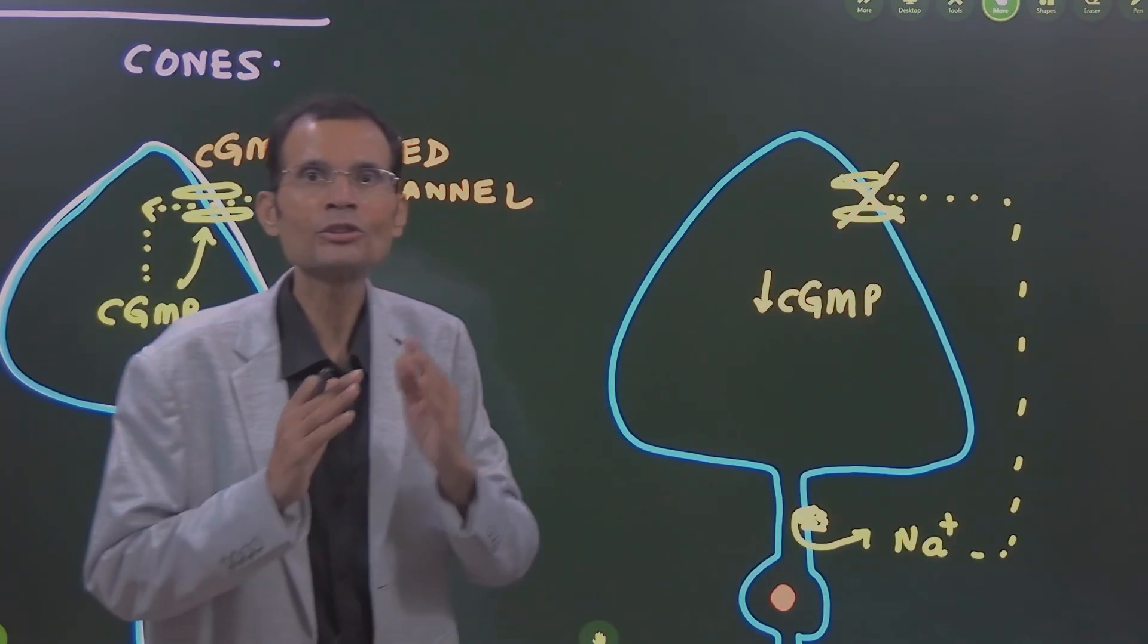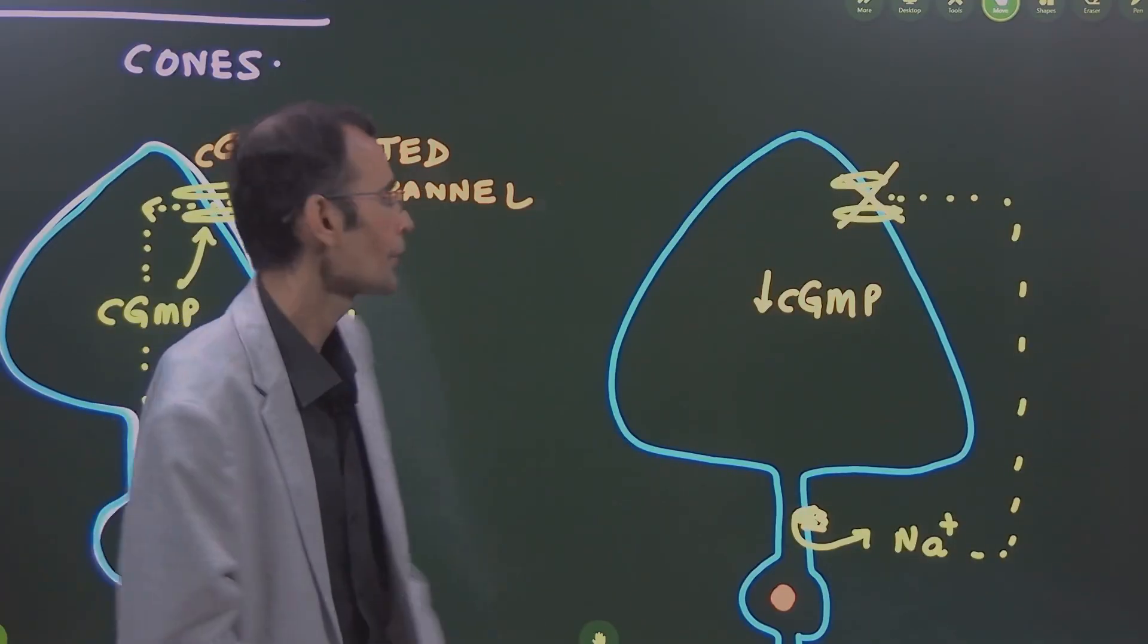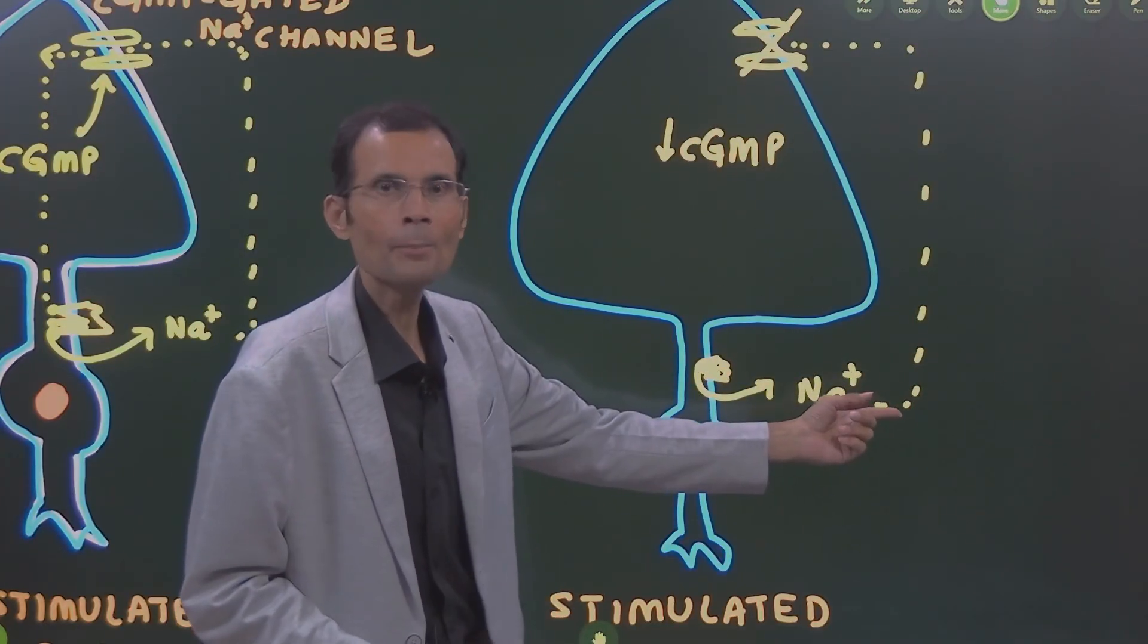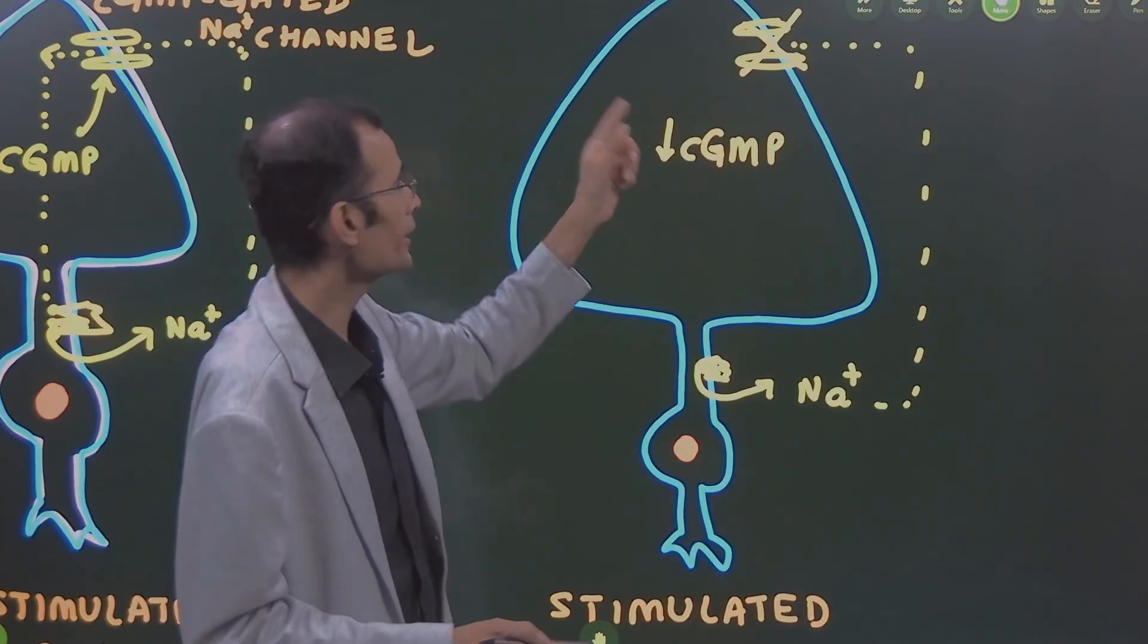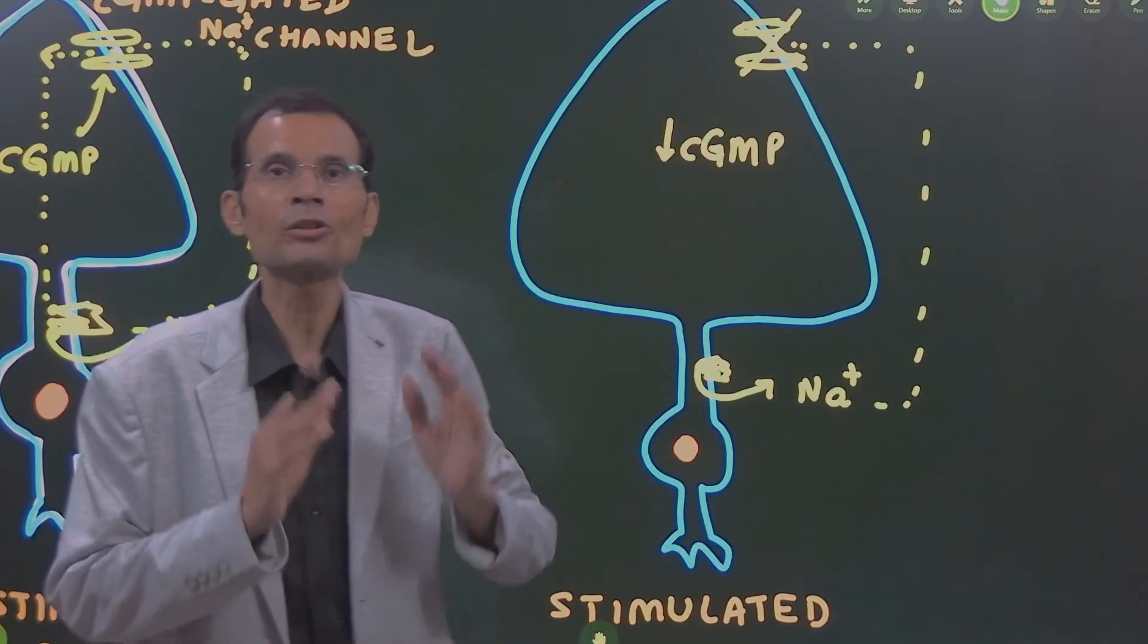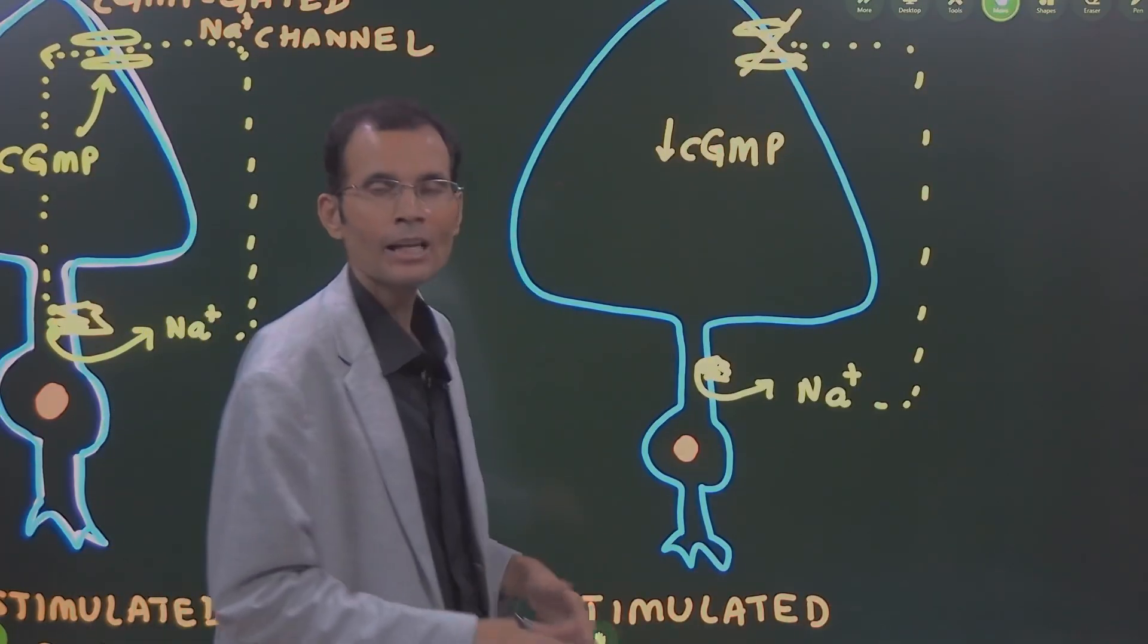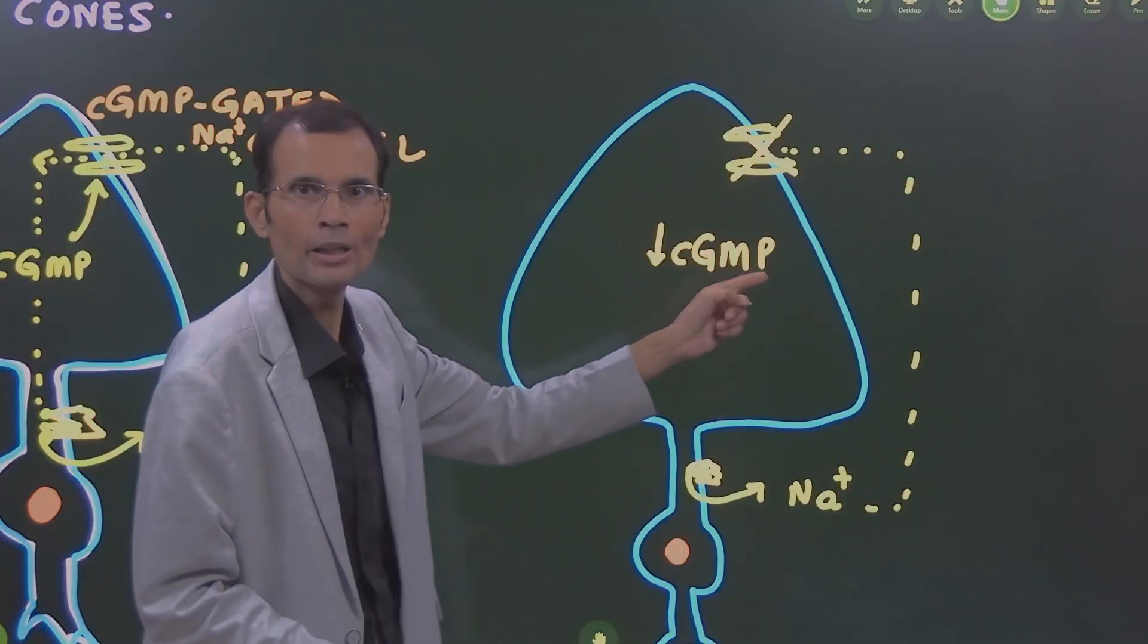This channel closes because of reduced cyclic GMP levels, and the sodium will go out by the sodium-potassium pump but cannot come back in as the light is striking the rod or cone. This is a stimulated cone when cyclic GMP levels decrease and therefore the sodium channel cannot be kept open.